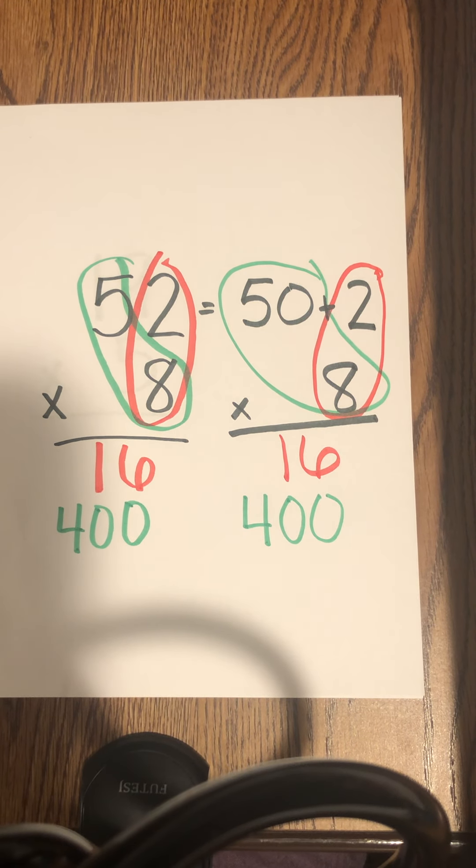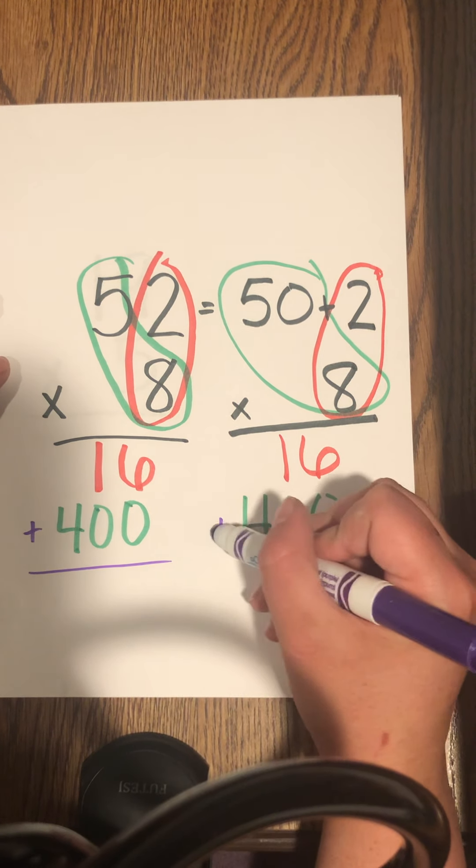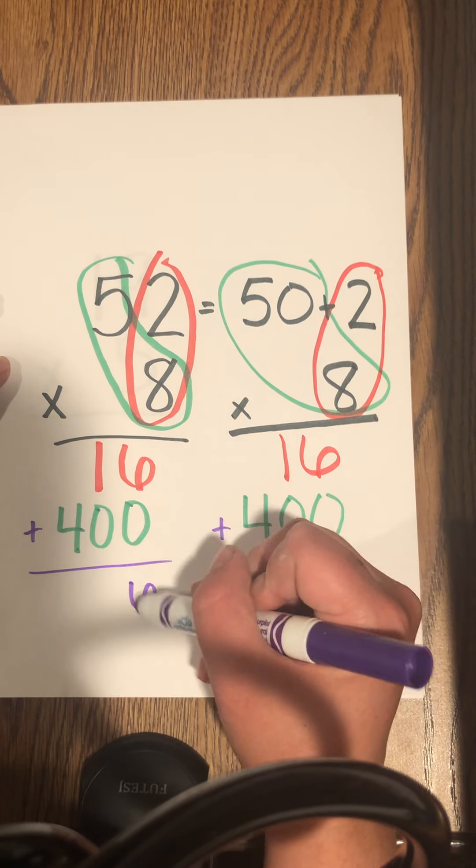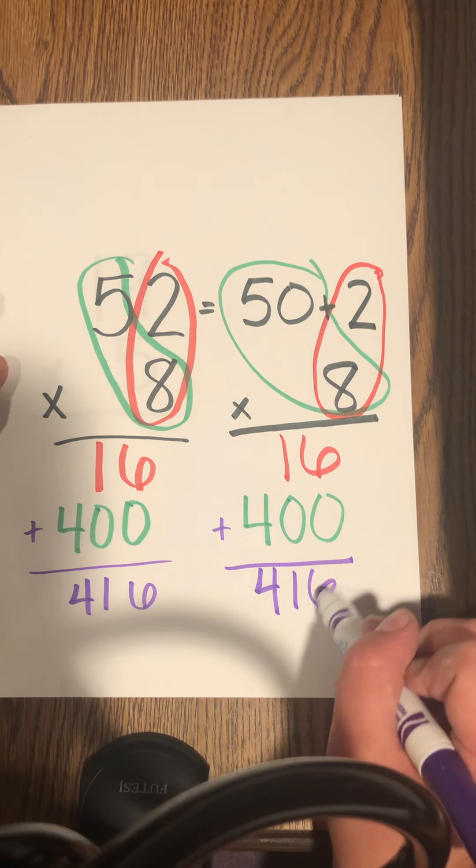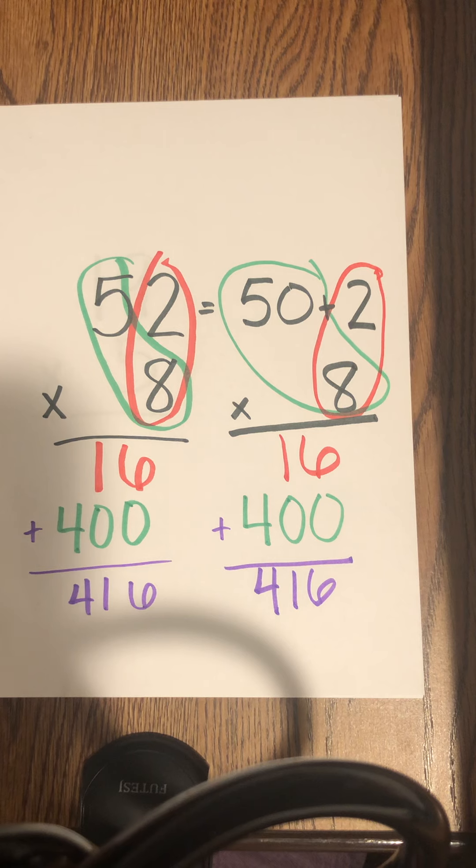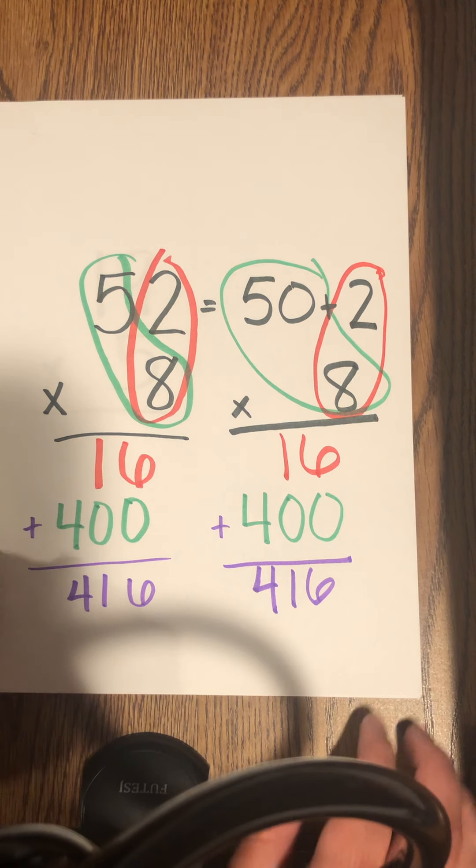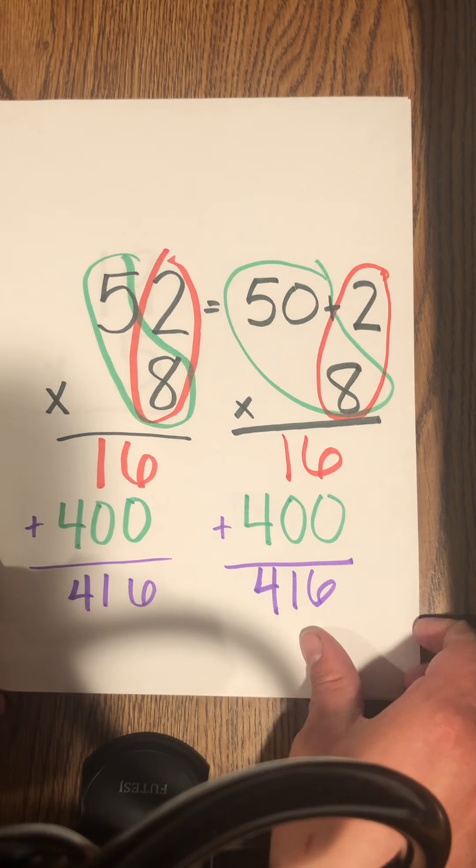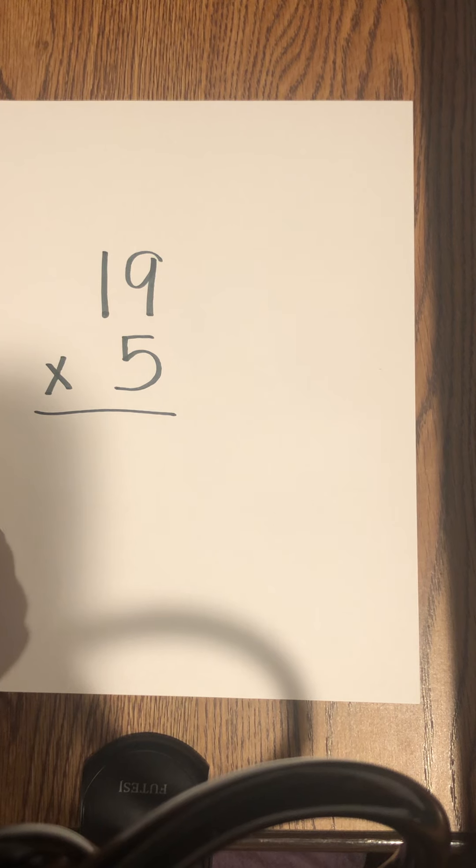Now what would I do with these numbers? I add them up. So let's add these. So, 52 times 8 is 416. All right, we're going to do one more.